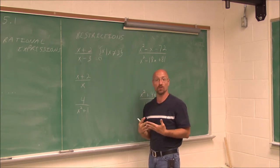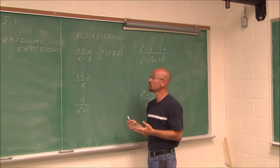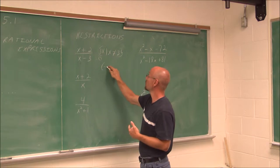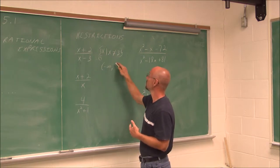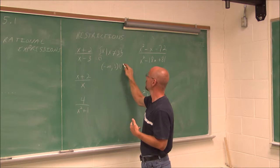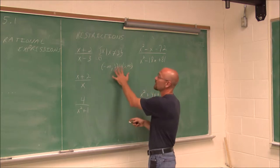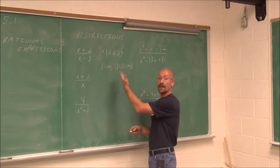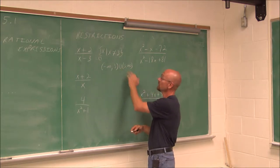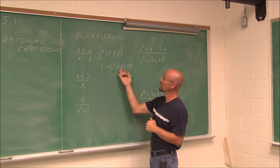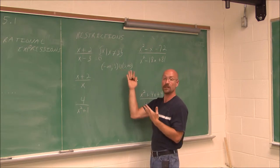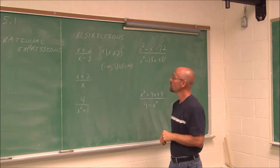I could write the restriction in interval notation as negative infinity to 3, union 3 to infinity. These are the values that I can use — it just restricts 3 from being in that interval.